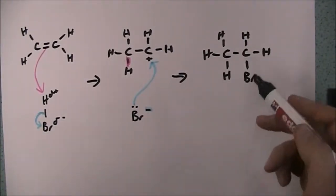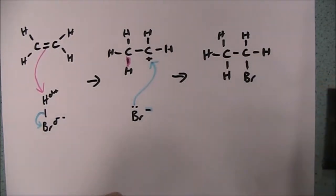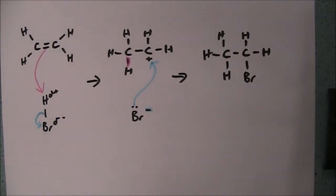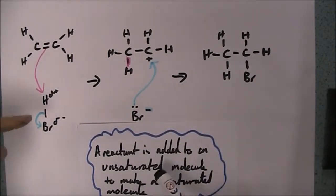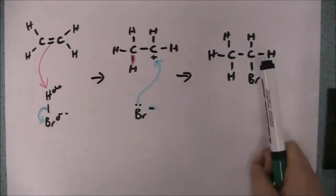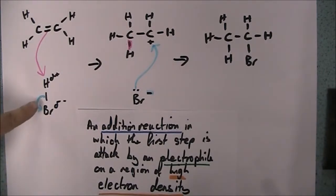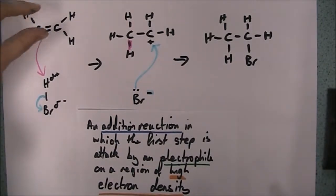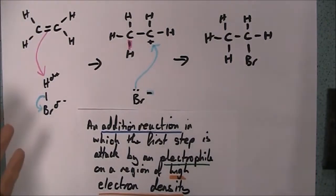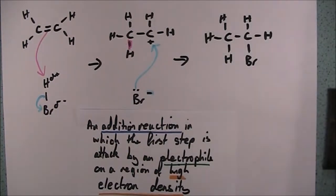And so we end up with our product here. No double bond in that anymore. That's now saturated. It was unsaturated. So this counts as an addition reaction because we've added a reactant to an unsaturated molecule to make a saturated molecule. And we've done that by having the first step in this mechanism attack by this electrophile onto the alkene where we had a high electron density in the double bond to complete our addition reaction. And that's the mechanism for electrophilic addition.